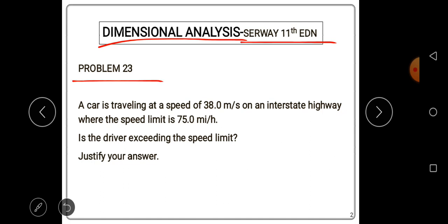23 under topic 1. The question reads: A car is traveling at a speed of 38.0 meters per second on an interstate highway where the speed limit is 75.0 miles per hour. This is the speed the